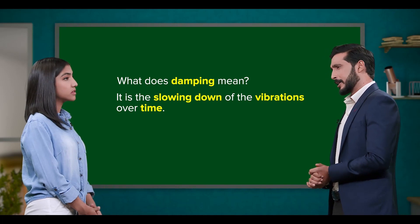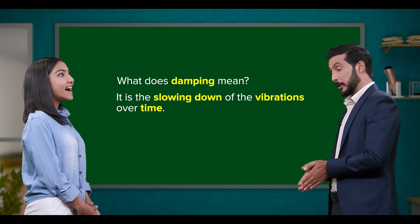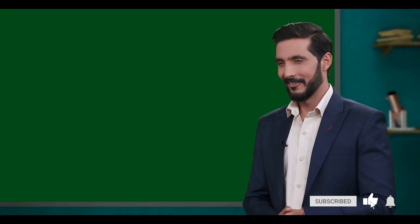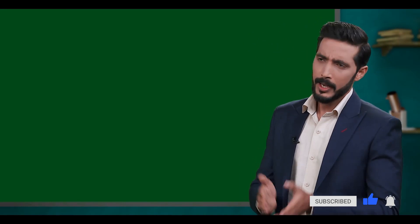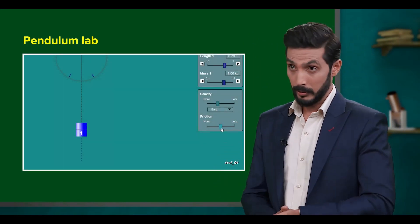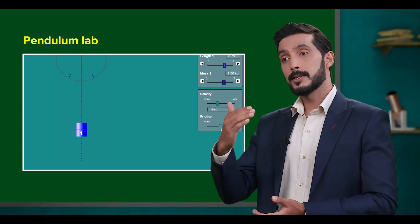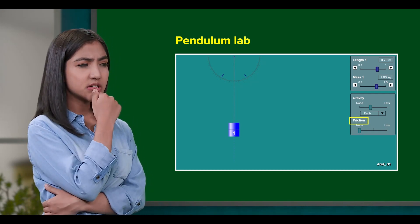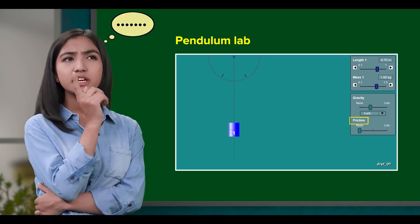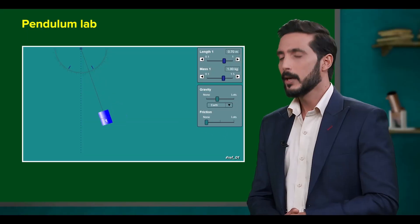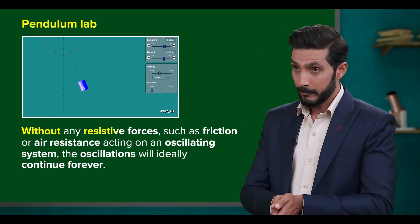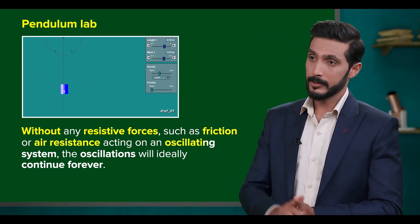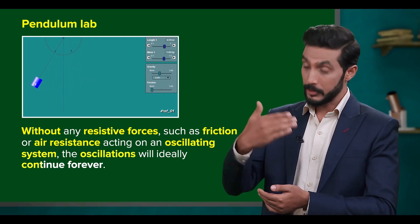Let's get back to our favourite pendulum lab simulation — that will definitely give you some insight into this. Sounds like a plan. First, let me ask you a question: what would happen to the oscillation of the pendulum if we were to set the value of friction to zero? I've tried that one before — it would go on and on forever, right? That's true. Without any resistive forces, such as friction or air resistance, acting on an oscillating system, the oscillations will ideally continue forever.